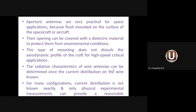The radiation characteristics of a wire antenna can be determined once the current distribution on the wire is known. In unit one we covered radiation from an oscillating current element and radiation from a half-wave dipole or quarter-wave monopole. To determine the radiation characteristics — that is, expressions for E_θ, E_φ, and H_φ — we must first determine the current distribution over the antenna element.